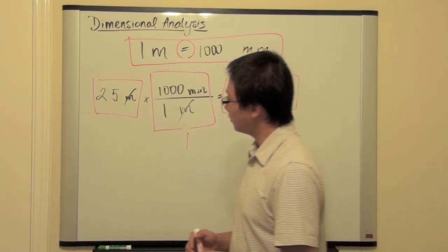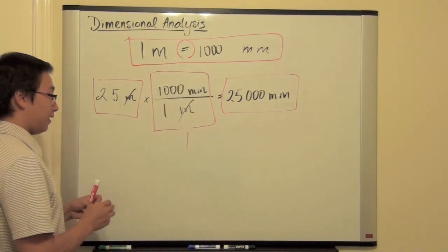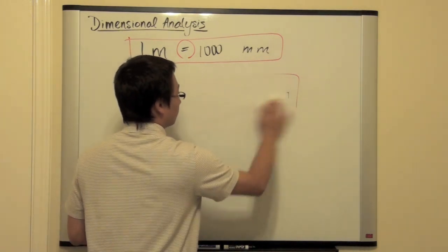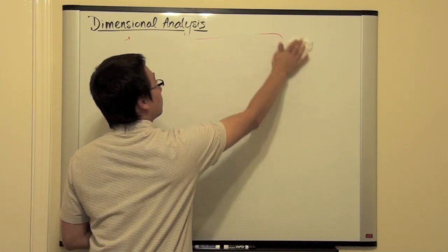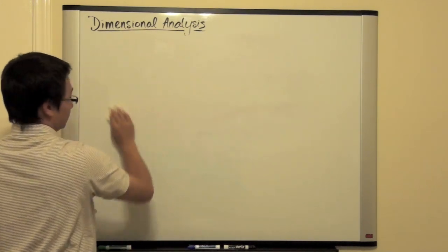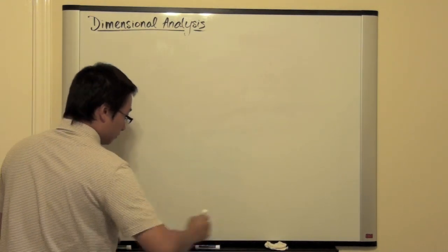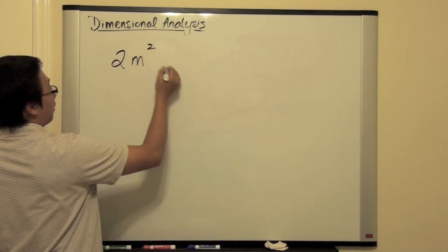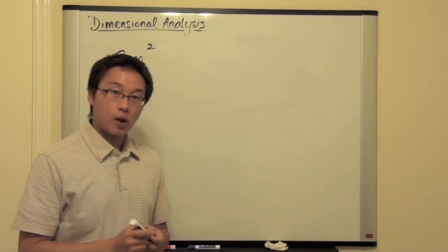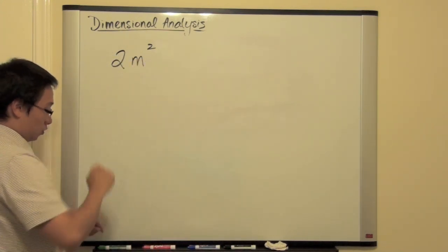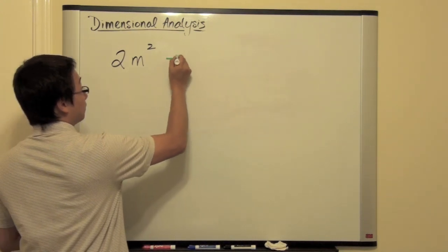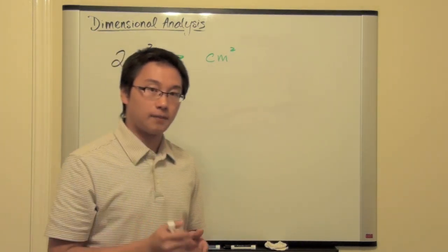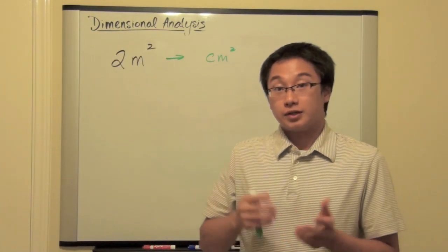Now, let's move on. If you understand the concept of 1, then we can go a little bit further. So, I am going to pose a question to you. And I want you to think about this. I want you to think about that what happened if I want you to change 2 meters square. 2 meters square. And I would like you to convert it in terms of centimeter square. I want you to think about this. And we will talk about this in the next tutorial.